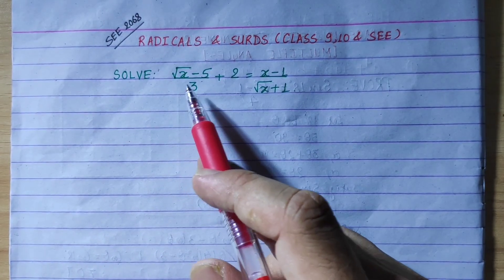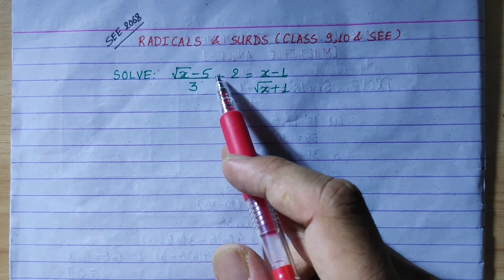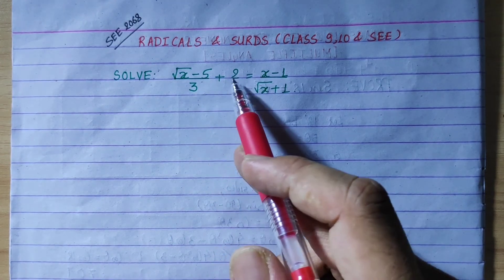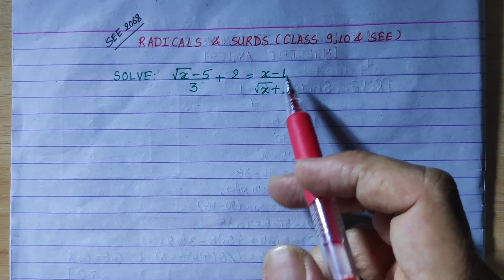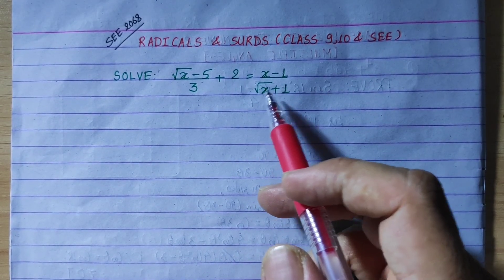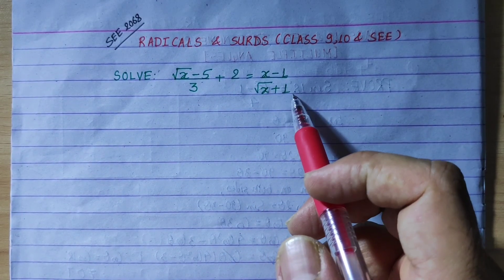Solve: root under (x minus 5) upon 3 plus 2 is equal to (x minus 1) upon root (x plus 1).